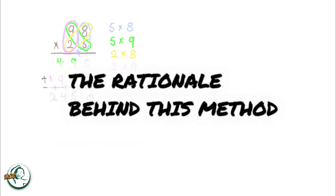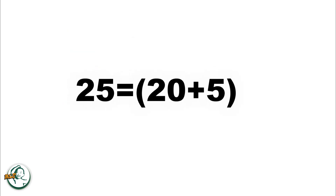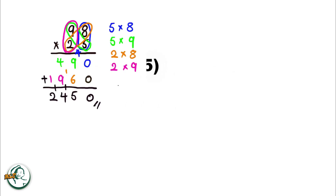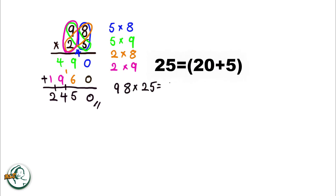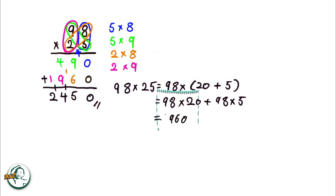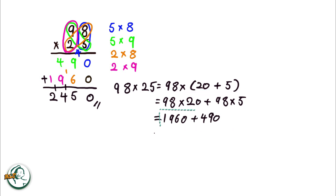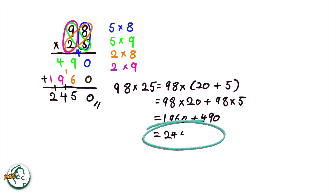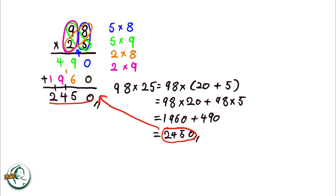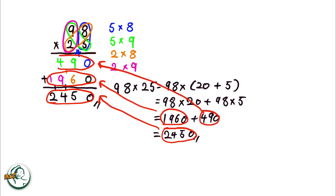Let's delve into the rationale behind this method. Consider 25 as 20 plus 5. We can express 98 times 25 as 98 times (20 plus 5). This expands into 98 times 20 plus 98 times 5, giving us 1,960 and 490 respectively. Adding these, 1,960 plus 490 equals 2,450. This explains why we need to add these two numbers in the column method.